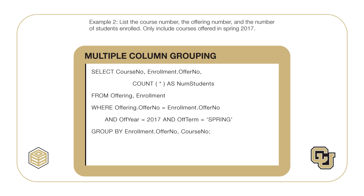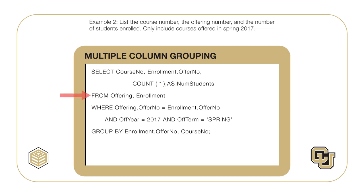For the second question on combining the tables, the offering and enrollment tables must be joined on offer number using a condition with the primary key and foreign key of the tables. For the third question about individual rows versus groups of rows, groups of rows are needed because the result includes the number of students enrolled, computed using the COUNT function. The SELECT statement shows three columns in the result, including an aggregate computation using the COUNT function. Note the use of renaming with the AS keyword to ensure a meaningful column name in the result table. The FROM clause uses the cross product join style to combine the enrollment and offering tables. The WHERE clause has one join condition and conditions on offering year and term. You should see Module 5 for an equivalent statement using the join operator style.